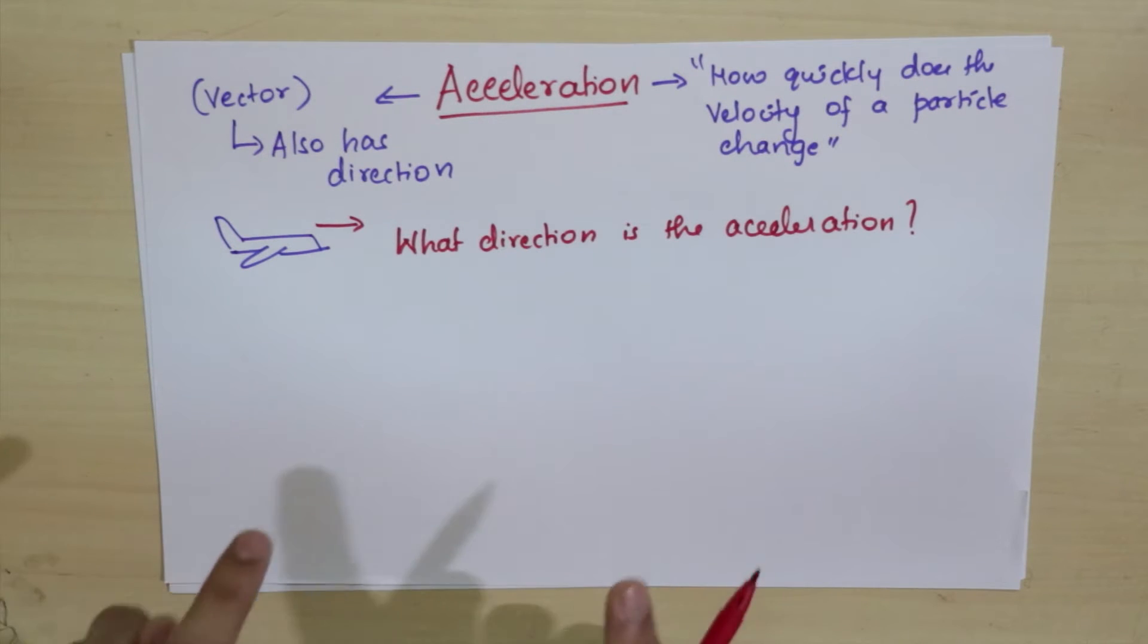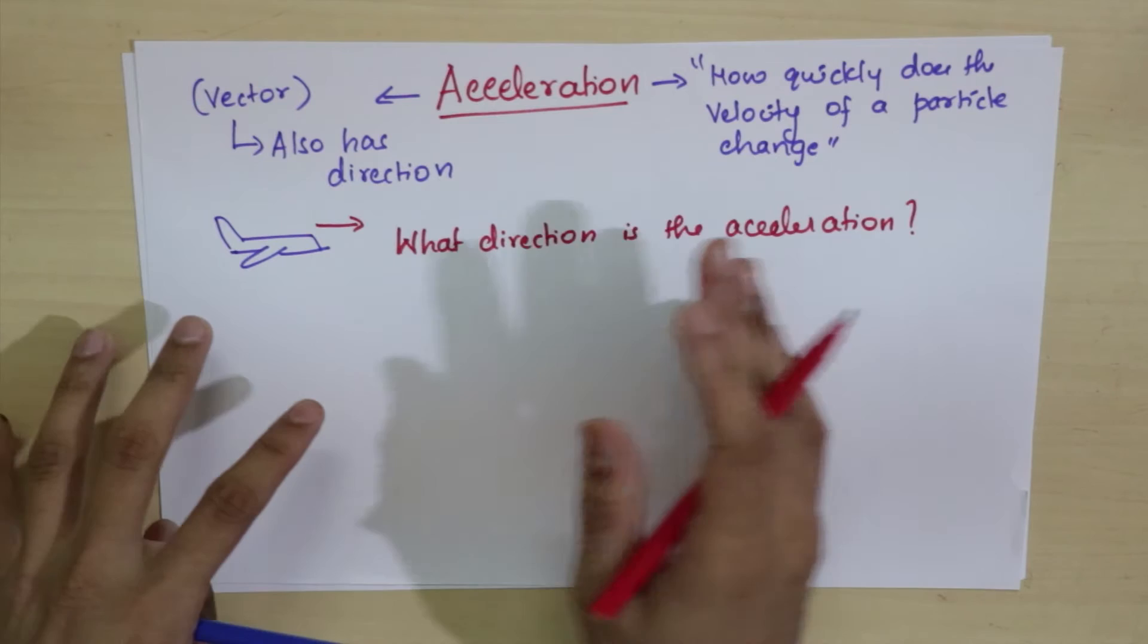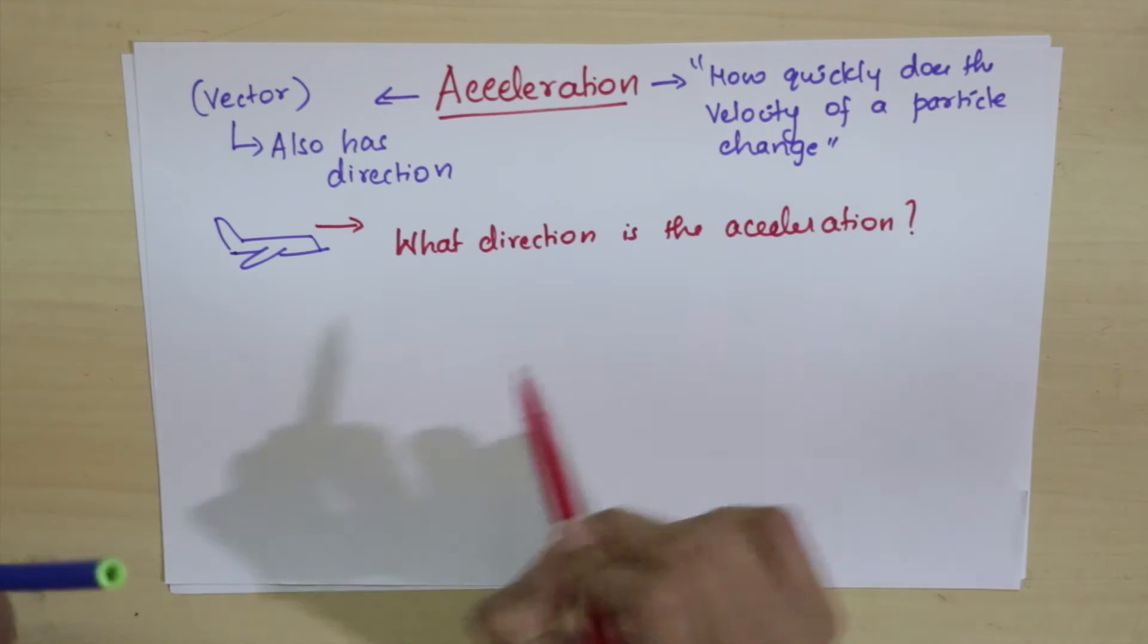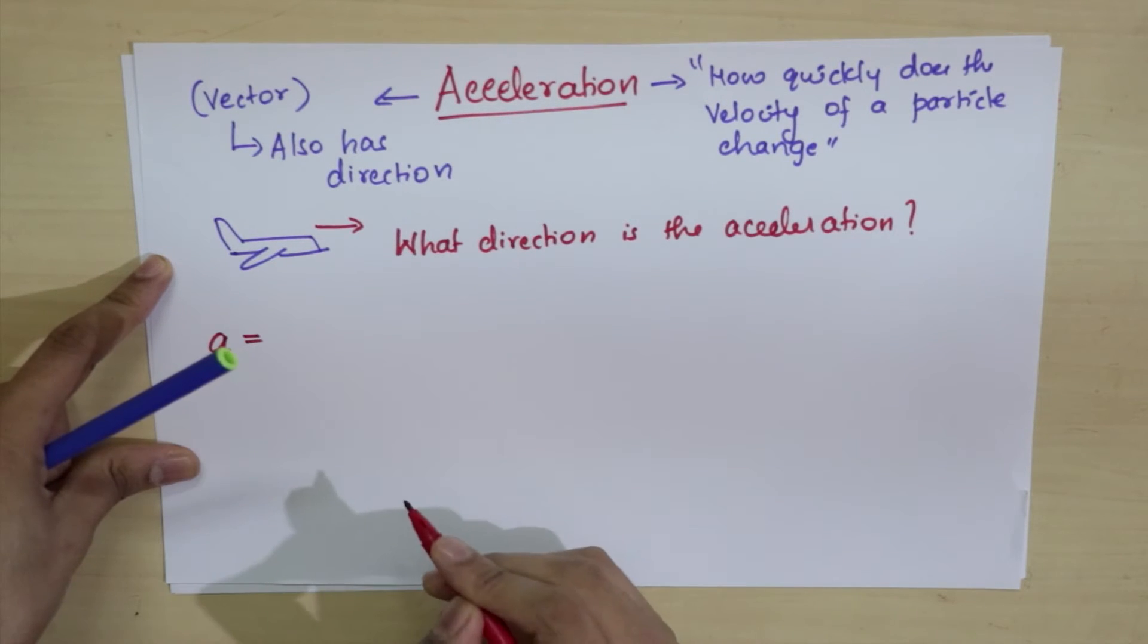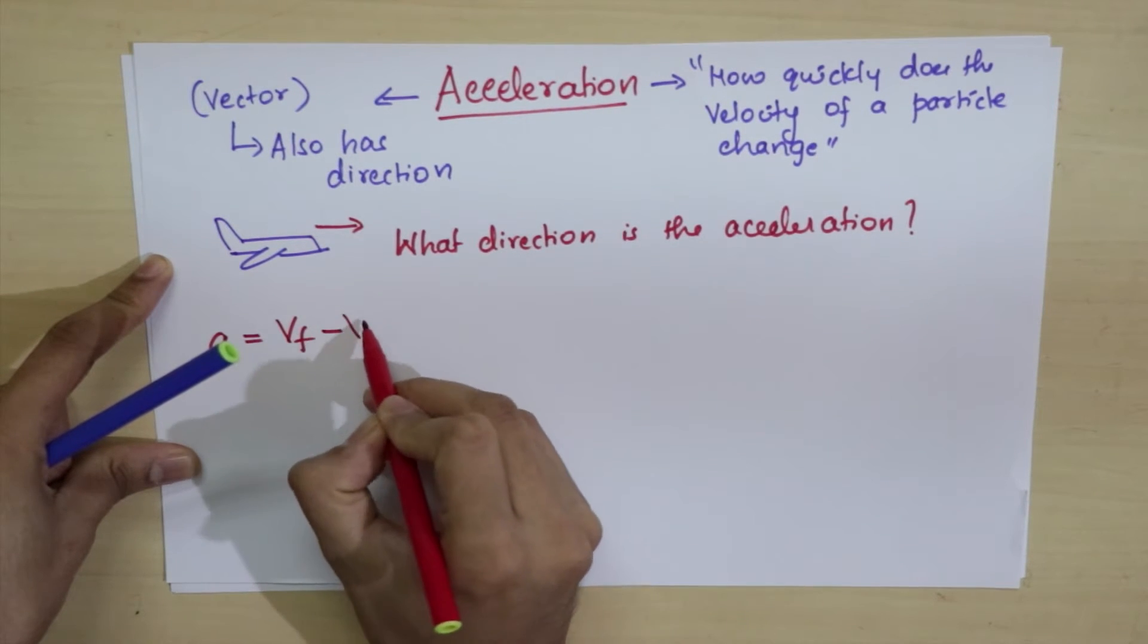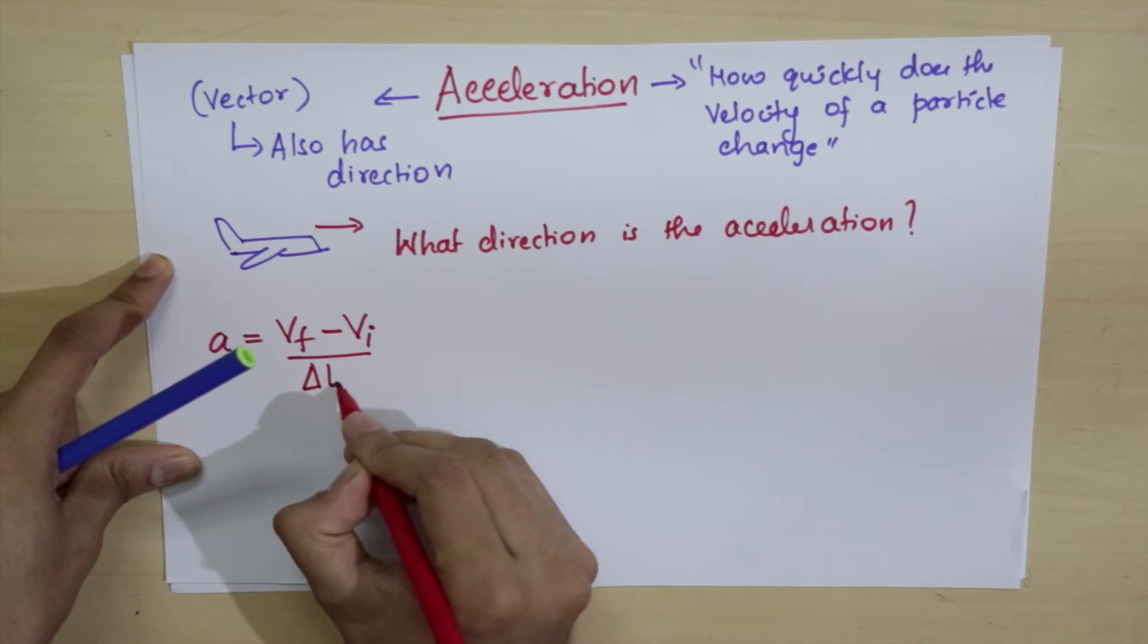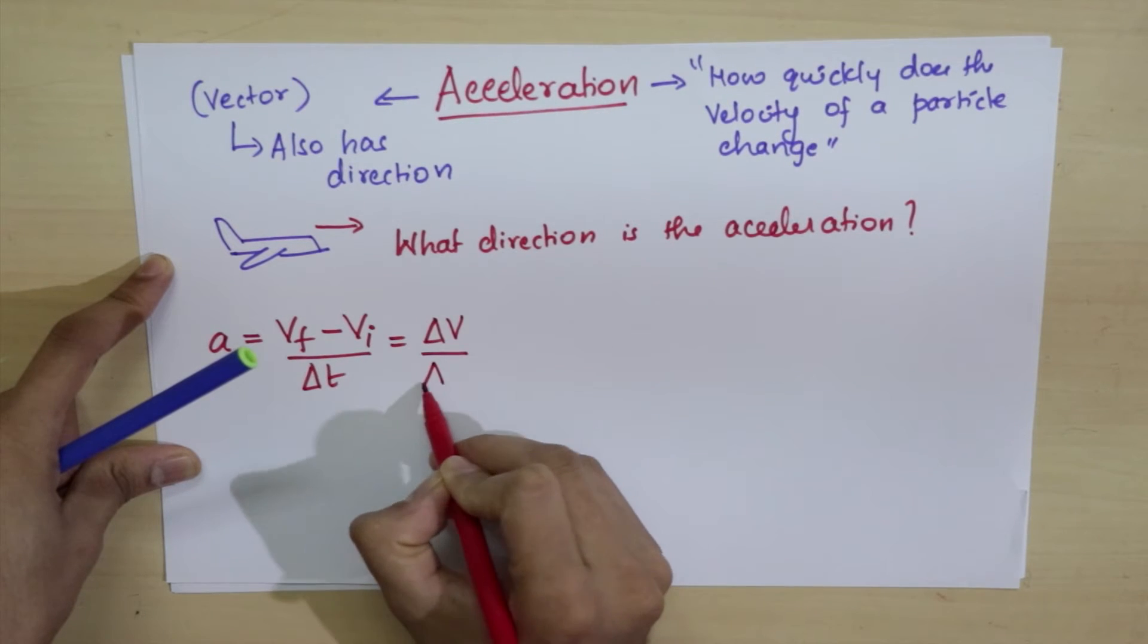To understand this, we need to know how to compute acceleration. Let's look at acceleration mathematically. Mathematically, a change is always calculated as the final velocity minus the initial velocity. So acceleration equals change in velocity.